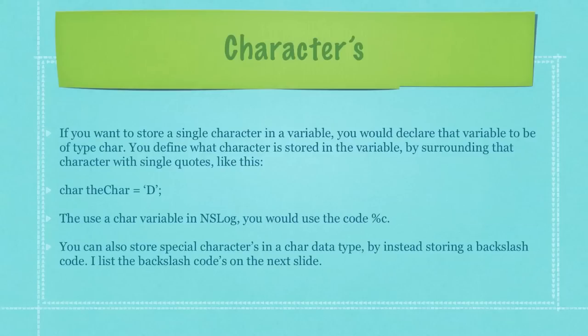If you want to store a single character in a variable, you would declare that variable to be of type char. You'd define what character is stored in the variable by surrounding that character with single quotes, like I show here in this example. To use a character variable to print to the screen with NSLog, you would use the code percent sign followed by the lowercase letter C.